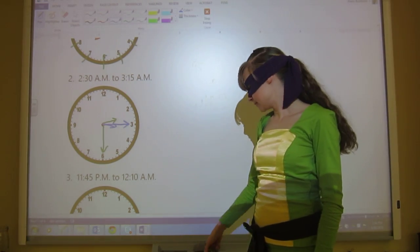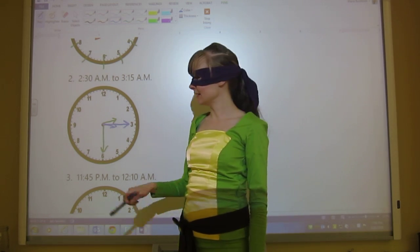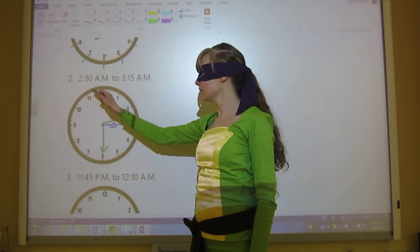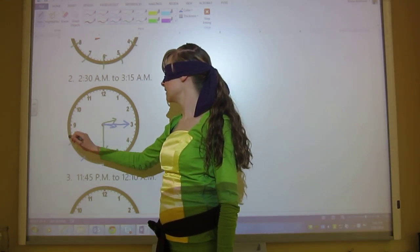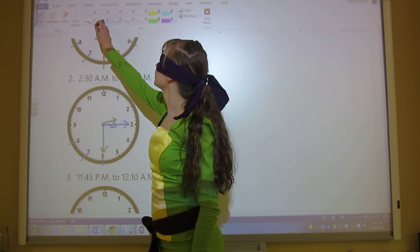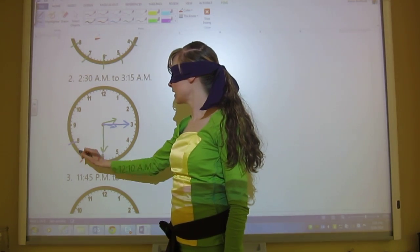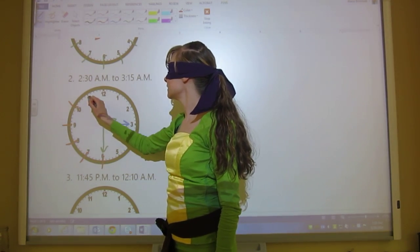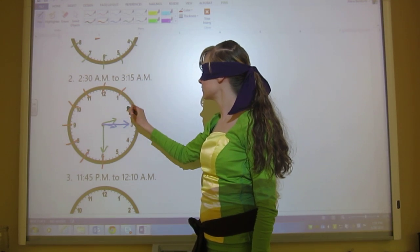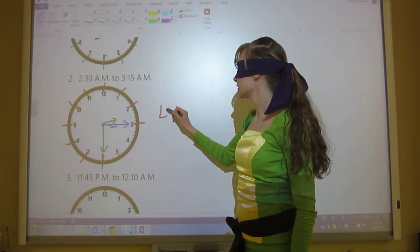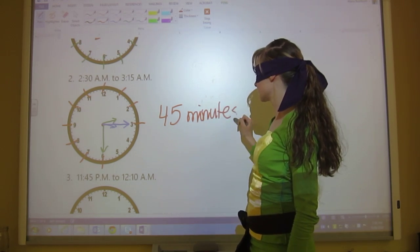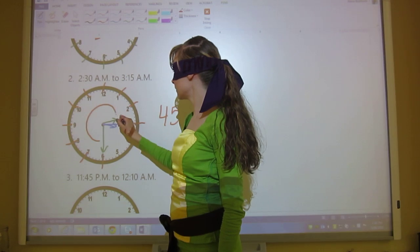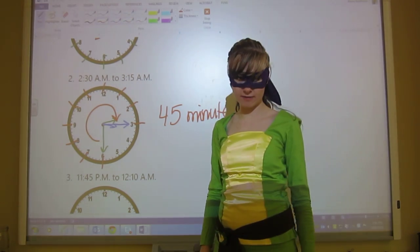So now all I need to do is find out how much time it is from here all the way around to here. So I start here at 0, 5, 10, 15, 20, 25, 30, 35, 40, 45. This is 45 minutes. From here all the way to there. It's 45 minutes.